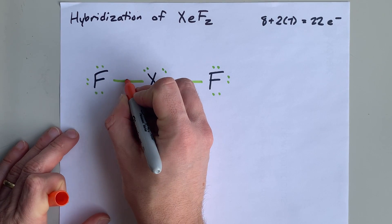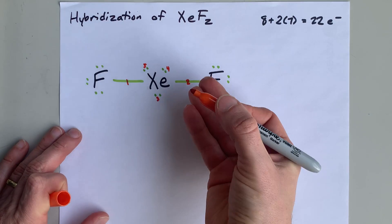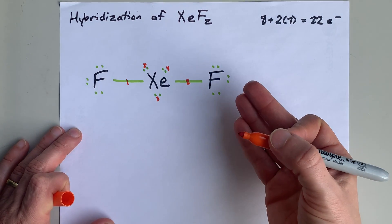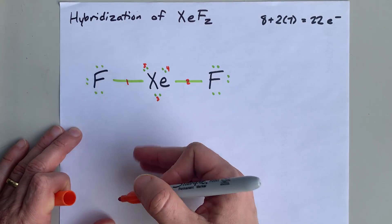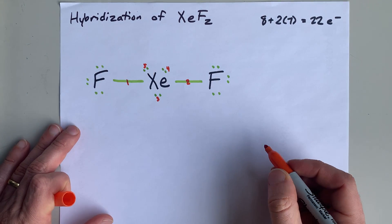So that's 1, 2, 3, 4, 5 hybrid orbitals that I need in order to accommodate 2 bonding pairs and 3 lone pairs.